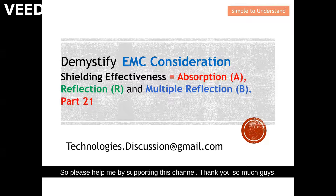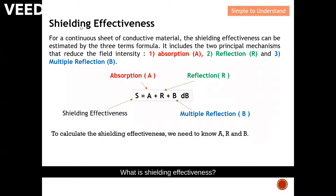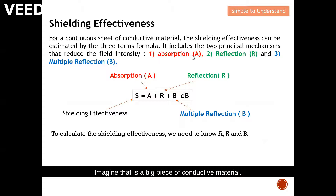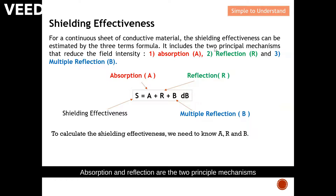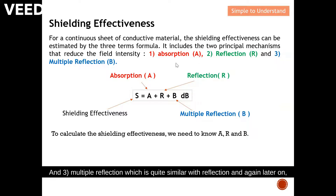What is shielding effectiveness? Shielding effectiveness relates to a continuous sheet of conducting material. The shielding effectiveness can be estimated by a three-term formula, which includes the two principal mechanisms that reduce field intensity: absorption and reflection. Those are the two principal mechanisms we will study further.